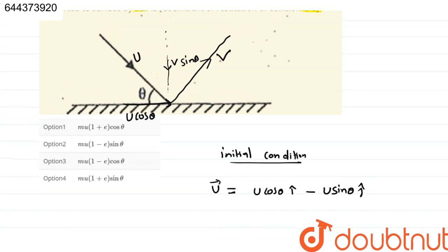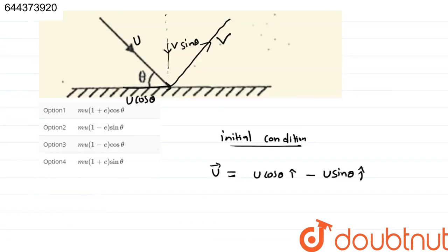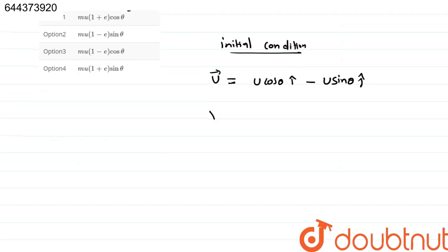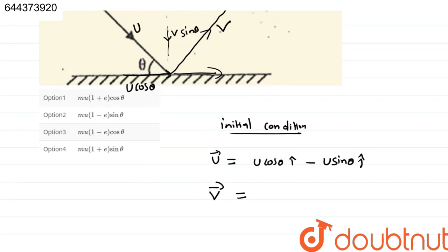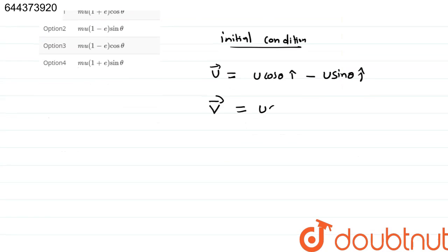Now, after the collision, only the vertical component is getting affected. So, we can write vector v is equal to horizontal component will remain same. So, we can write vector v is equal to u cos theta i cap. Now, only vertical component has changed.